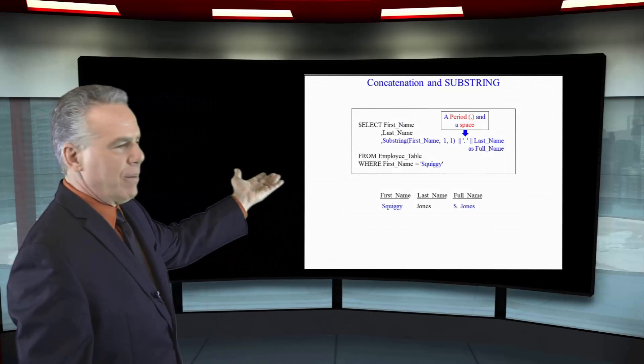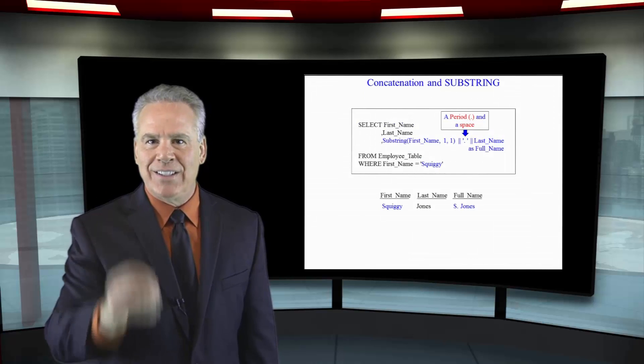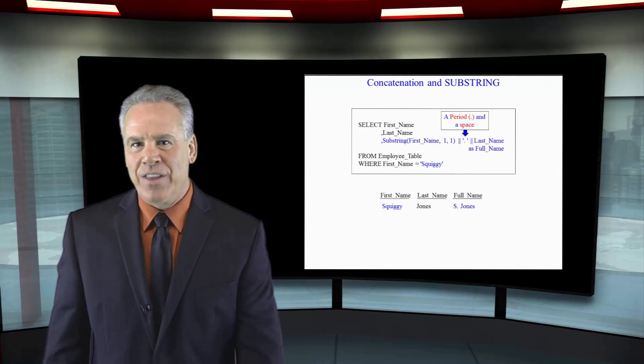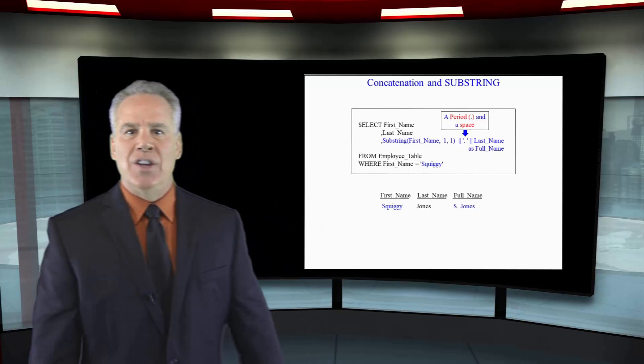We're going to say, select first name and last name, substring first name comma one for one to just get the first initial of the first name. Then we're going to concatenate that with a period space and then concatenate that with the last name and voila, we have done the job.